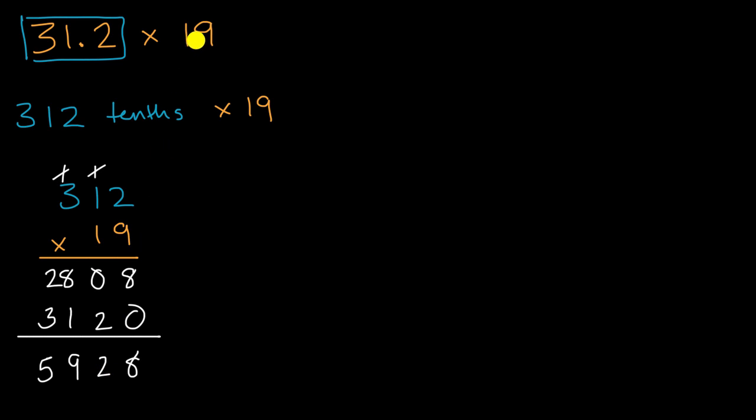Now that's not going to be the answer here. The answer is going to be 5,928 tenths. So this is going to be equal to 5,928 tenths. Now, how can we express this as a decimal? Well, we could think of it this way. If that's the decimal, this is the tenths place. This is the ones place, which is the same thing as 10 tenths place, which is the ones place.